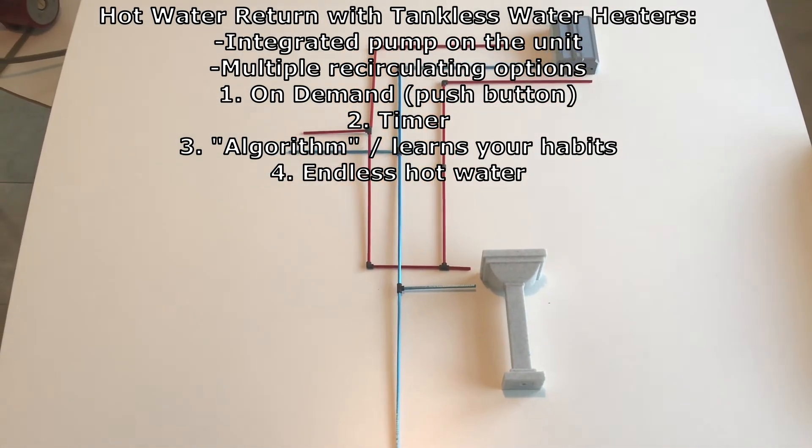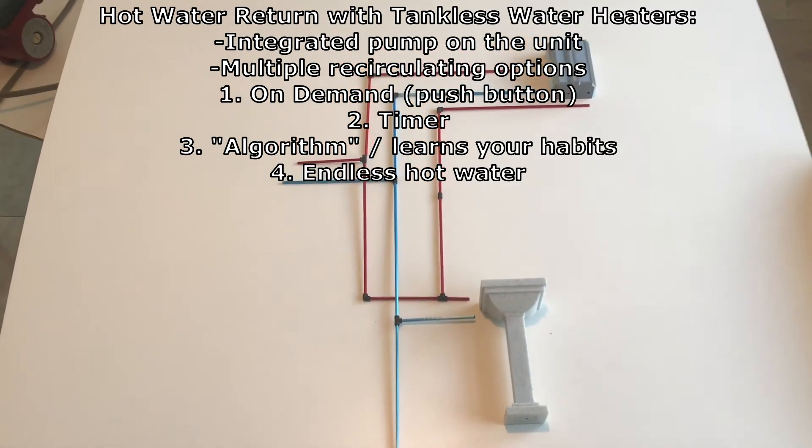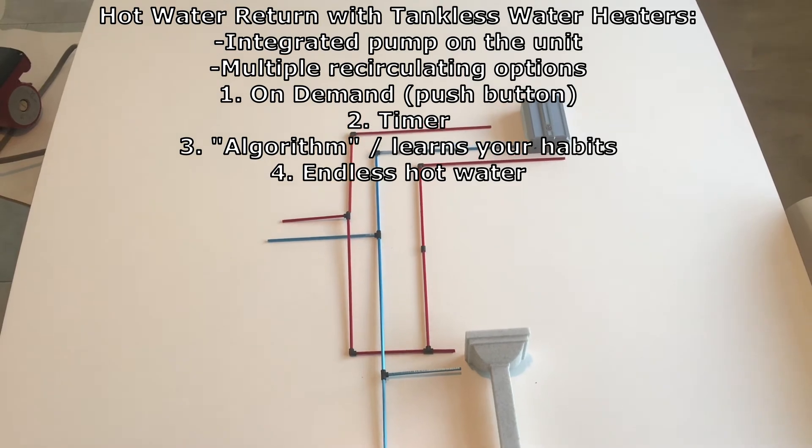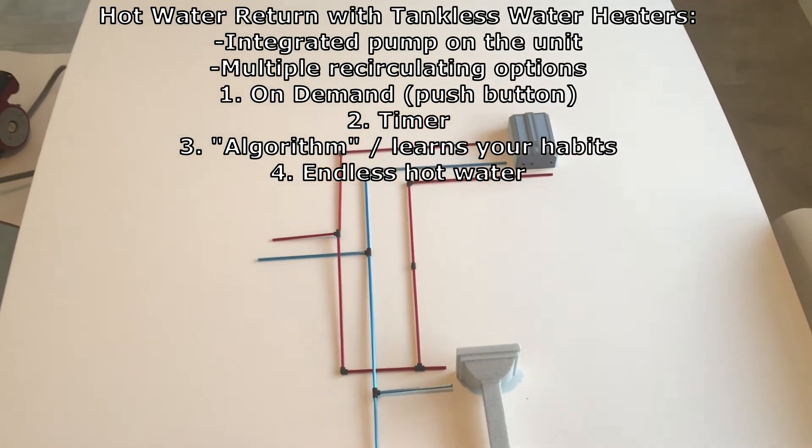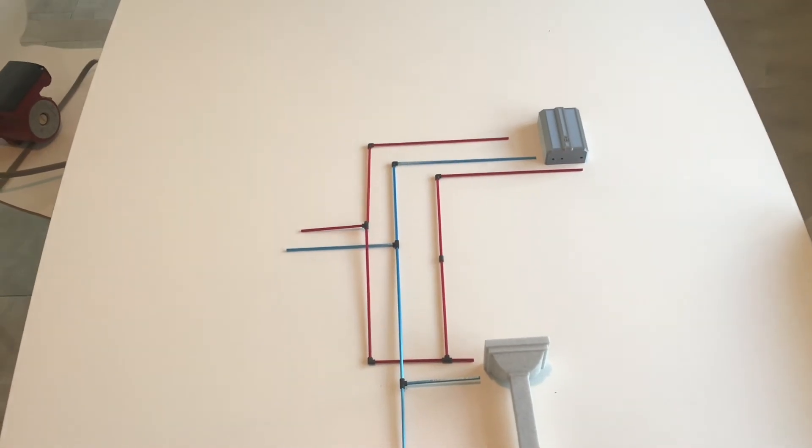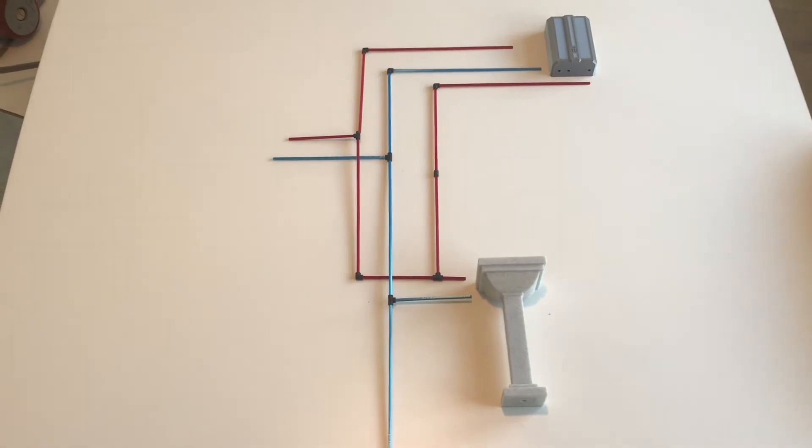You can set several parameters on the tankless water heater. You can set it up by a timer so you can have it recirculating hot water from 7 a.m. to 10 a.m. and then from 1 p.m. to 2 p.m. or whatever. But the setting that we use at my household is called like a smart mode or something like that.